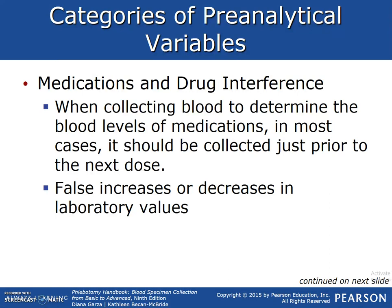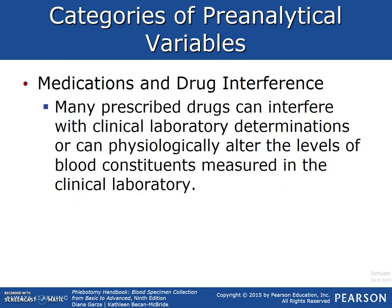Medication and drug interference: when collecting blood to determine blood levels of medication, in most cases it would be collected just prior to the next dose. False increases or decreases in laboratory values can be impacted. An example would be a vancomycin level, which is an IV antibiotic. We would draw levels either for a peak or a trough, and these would be collected as part of what's called TDM — therapeutic drug monitoring — making it a timed test. Many prescription drugs can interfere with clinical laboratory determinations and can physiologically alter the levels of blood constituents measured in the clinical laboratory.